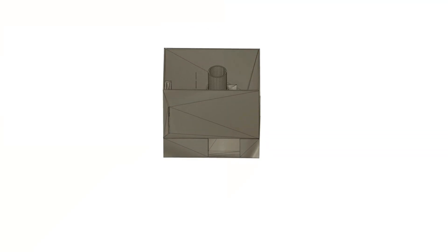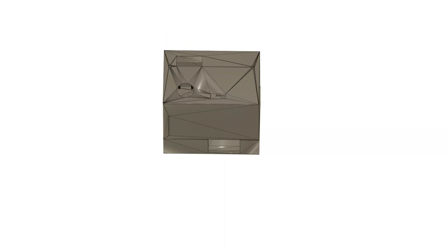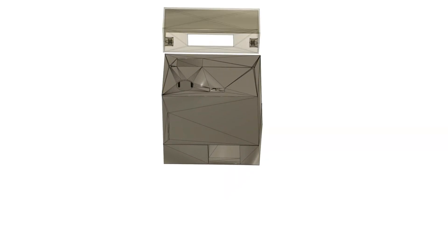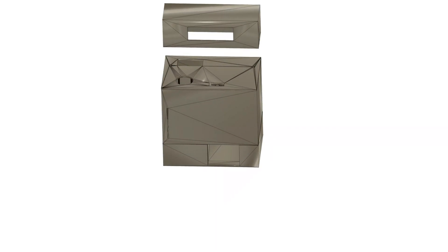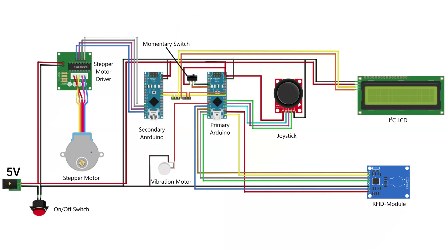The middle part houses the mechatronics, in which there is a cutout for the RFID card. On top of that is another cover with place for the joystick and money intake. Finally, the housing for the LCD is positioned on top. The ATM is wired as shown in the circuit diagram.